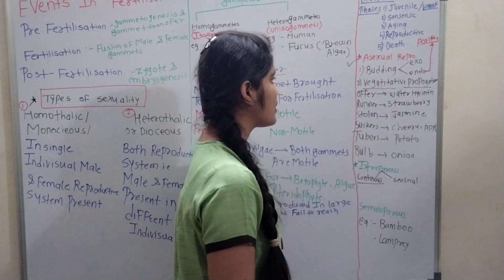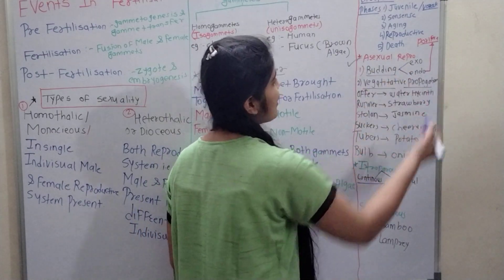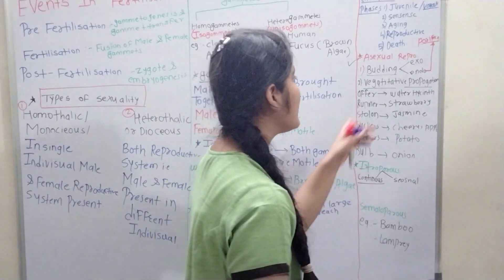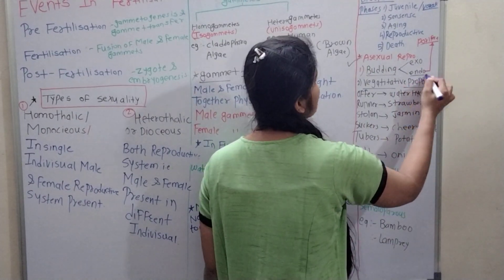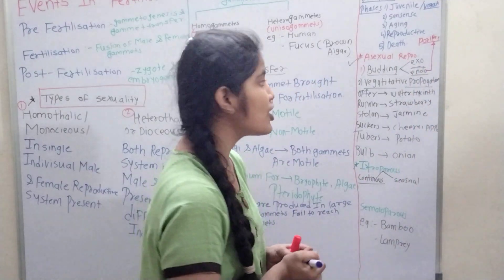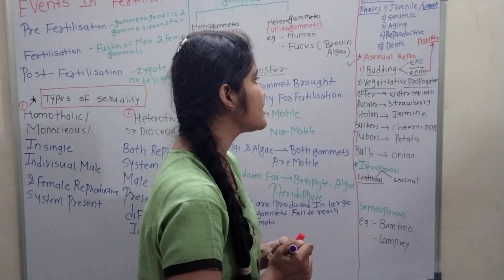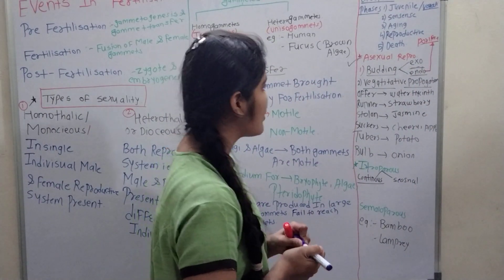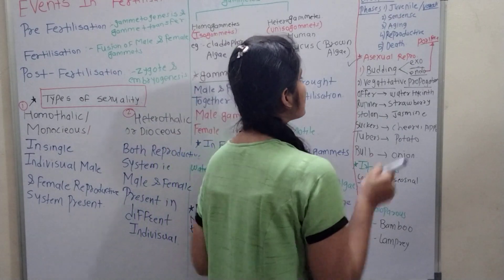In asexual reproduction, we see first is budding. Budding may be exo and endo. In endogenous example, Hydra prolifera, and in exo, examples are yeast, Saccharomyces cerevisiae. This yeast is also known as baker's yeast or brewer's yeast.